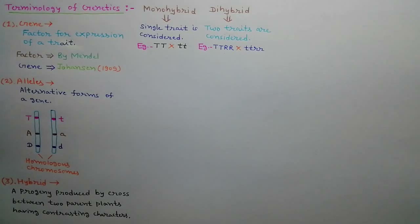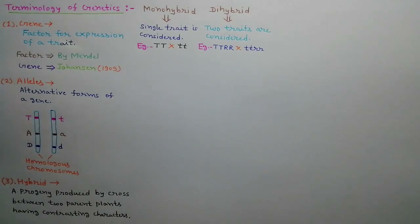While in a dihybrid cross, contrasting characters of two traits are considered, for example TTRR × ttrr.